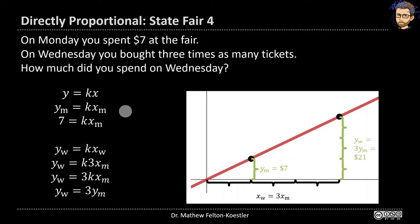We can also see these as similar triangles starting at the origin. It's important to note this only works because this is a proportional relationship that goes through the origin. If there were an entrance fee, this same rule wouldn't work — the entrance fee would be a flat rate shown by a y-intercept that isn't zero. So this only applies to directly proportional relationships through the origin.